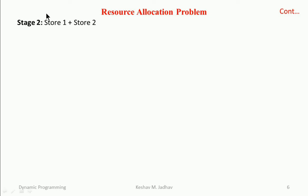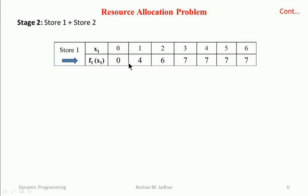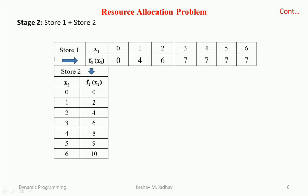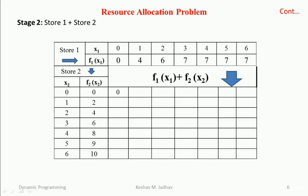In stage two we consider store one and store two together. x1 is the number of boxes allocated to store one and f1(x1) is the respective profit. x2 is the number of boxes allocated to store two and f2(x2) is the respective profit. For the combined profit of stores one and two, total profit = f1(x1) + f2(x2). For zero allocation, total profit is zero. If you allocate one box to store one and zero to store two, profit is 4 + 0 = 4, and so on.